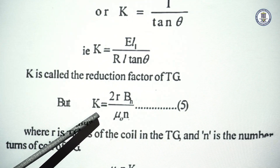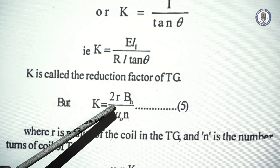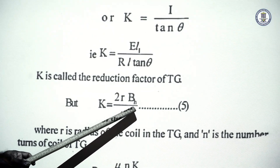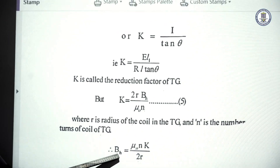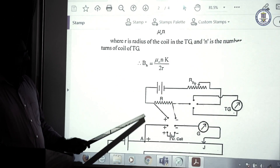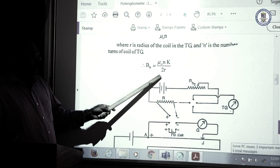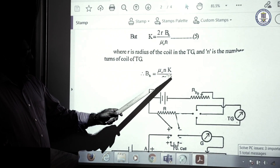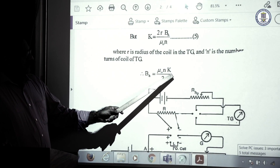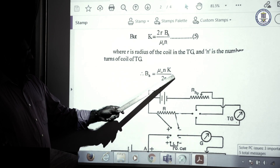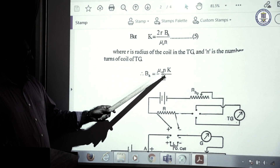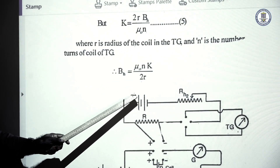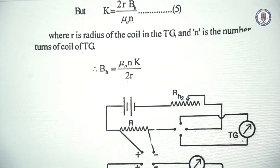Therefore, this experimental setup can also be used to find the value of BH at a particular place. From that expression, BH = μ₀·N·K / 2R, where K is the reduction factor already obtained, N is the number of turns of the TG, and R is the radius of the tangent galvanometer.